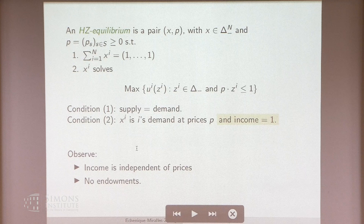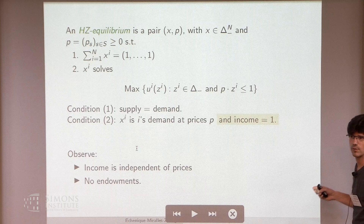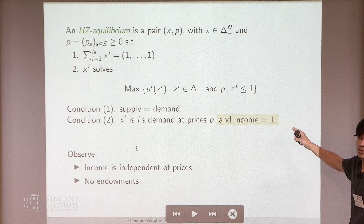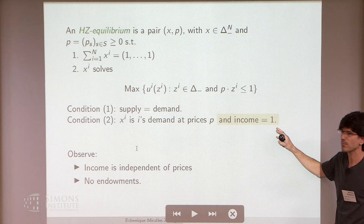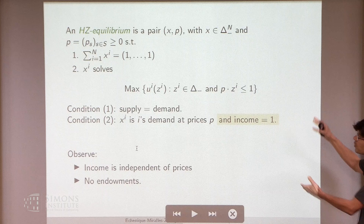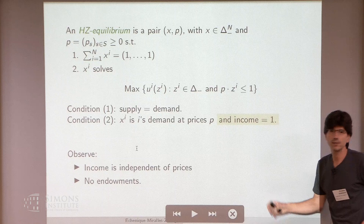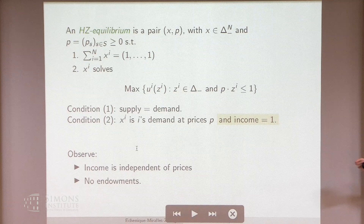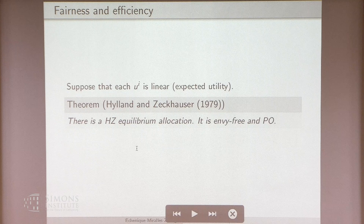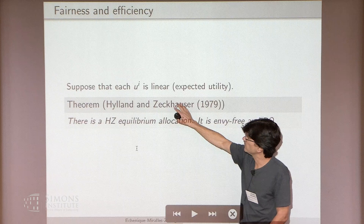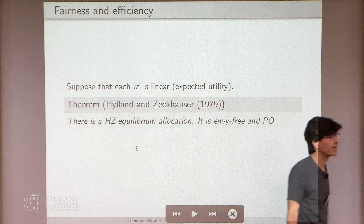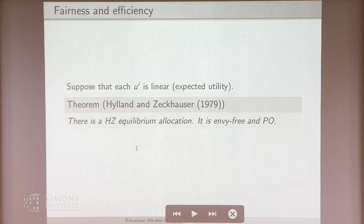This is what's called a pseudo-market, because the money comes from somewhere else. You can set up this market if you're a market designer, but it's not a model of an economy. Fairness and efficiency can be achieved as long as you have some discipline on the utilities — certainly if utilities are linear, then you can obtain both envy-freeness and Pareto-optimality through a Hylland-Zeckhauser equilibrium.